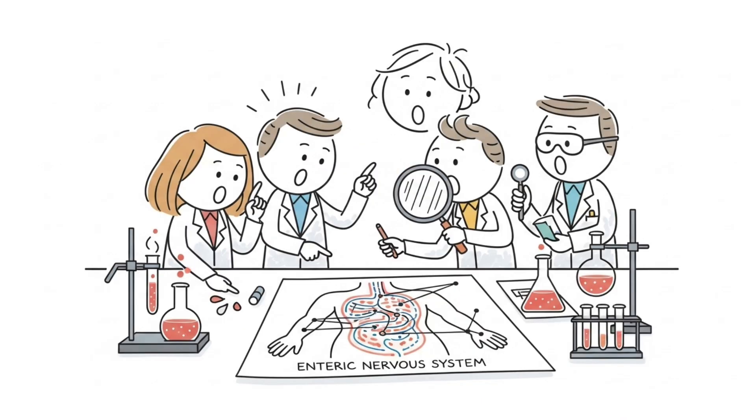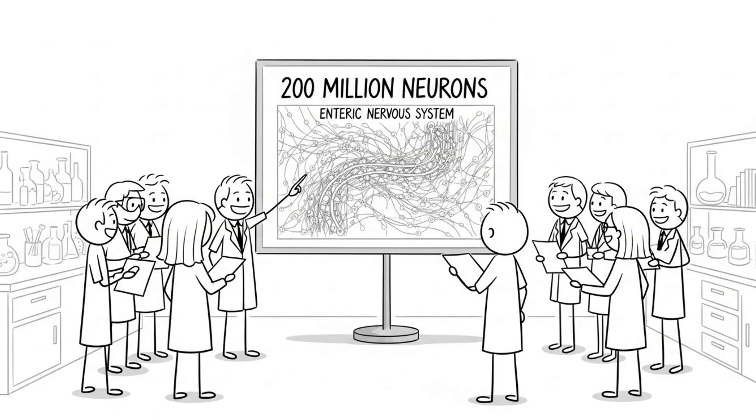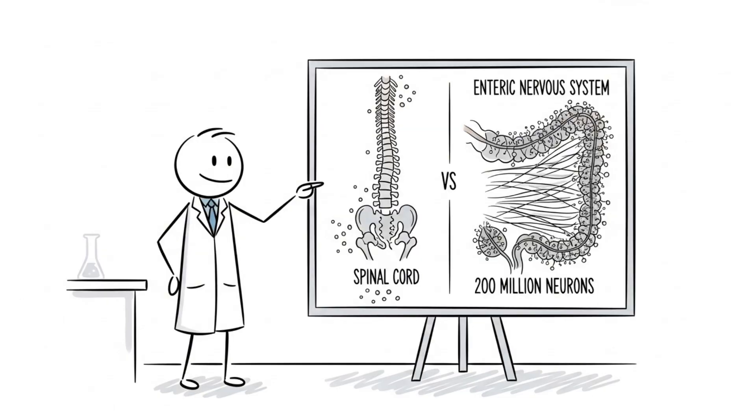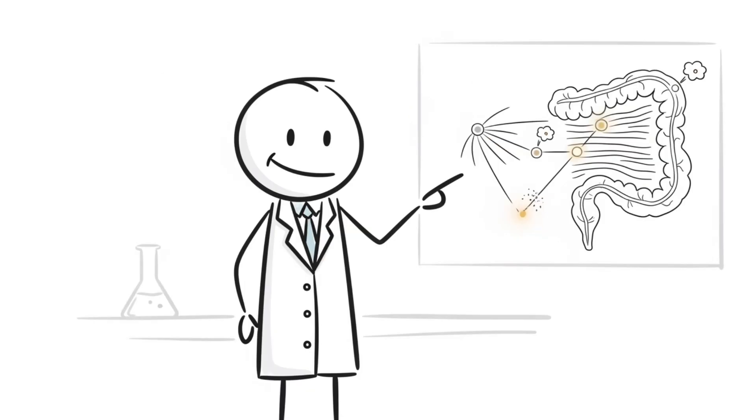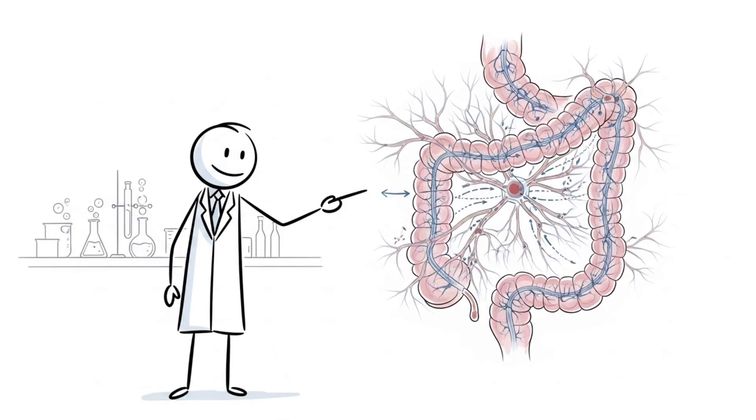When they first mapped it, they were genuinely shocked. Over 200 million neurons. More than your spinal cord. This isn't supporting tissue, this is intelligence, and it's processing, deciding, and signaling all on its own.